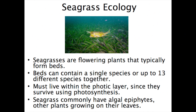Seagrass ecology: seagrasses are flowering plants that typically form beds. The beds can contain a single species or up to 13 different species living together. They must live within the photic layer, in the euphotic zone, since they survive using photosynthesis. Seagrasses commonly have algal epiphytes, which are other plants growing on their leaves.